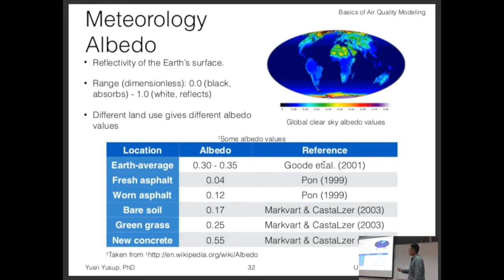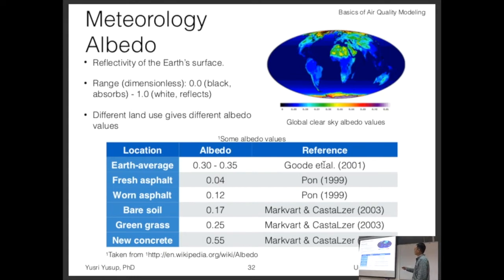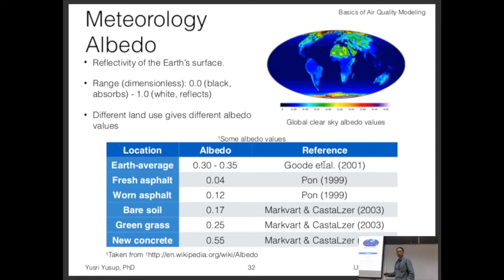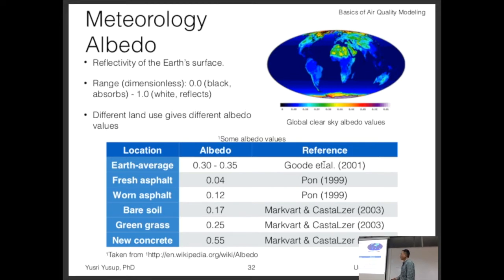So albedo is simply the reflectivity of the Earth's surface. Here is the clear sky albedo values for different parts of the Earth — the range is from zero (black), where it wholly absorbs radiation, to white (one), where it reflects everything. The albedo value for the ocean is quite low because it's blue-green, which makes sense for plants too, since they want to absorb energy as much as possible rather than reflect it.